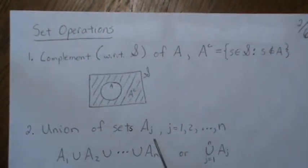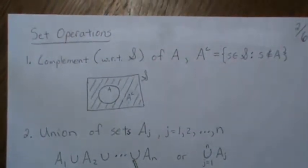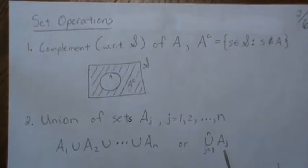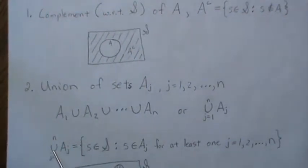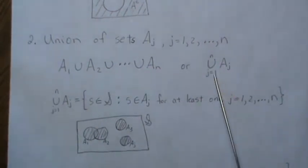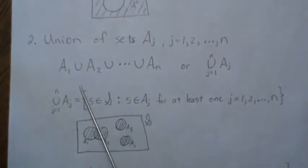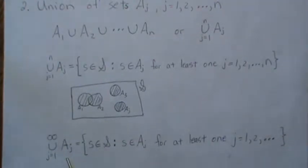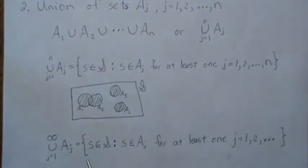The union of sets — this is a countable union — we write it from 1 to N, take the union of A_ij. That means all the elements of S, the sample space, such that s is in at least one of those A_ij's. That's what union means; it doesn't have to be in every one of them, just one. If it's an infinitely countable set, s just has to be in one of those A_ij's.